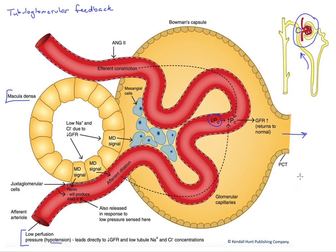The tubular transporters have essentially a fixed rate of function, so that slower flow is going to allow for enhanced reabsorption of solute, especially sodium and chloride, along the ascending limb of Henle. We're going to bring more sodium and chloride out, reducing the osmolarity in the macula densa cells where we pass through that vascular pole. This results in low sodium and chloride due to the fall in GFR and the associated fall in nephron flow rate.